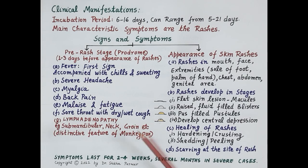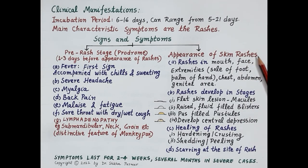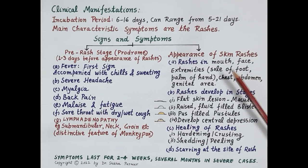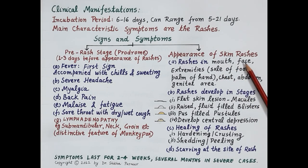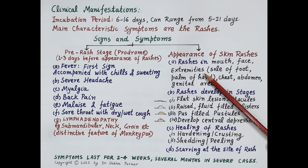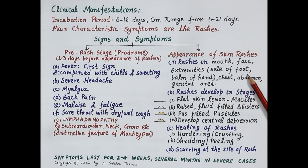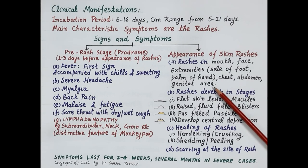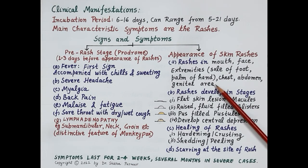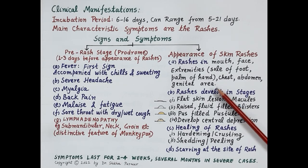Skin rashes appear one to three days after fever. Rashes are first seen in the mouth — for example, on the tongue — then from the mouth rashes spread to the face, then to the extremities, that is hands and legs. Rashes can also be seen on the sole of the foot, palms of the hand, chest, abdomen, and the genital area. These skin rashes spread throughout the body.